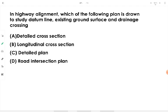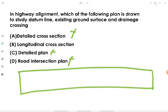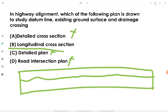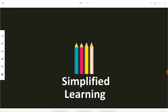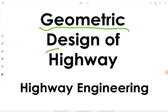In highway alignment, the longitudinal cross-section is the plan drawn to study the datum line, existing ground surface, and drainage crossing. It shows the cross-section along the length of the road — along the direction of alignment — indicating where filling is required, where the datum line lies, undulations, and the existing condition of ground surface and drainage crossings.